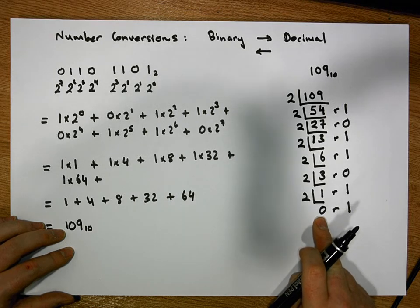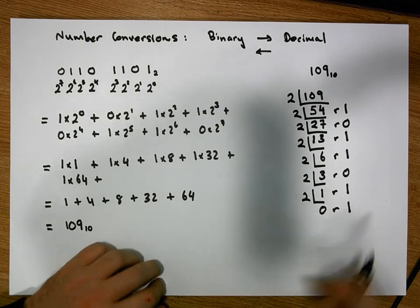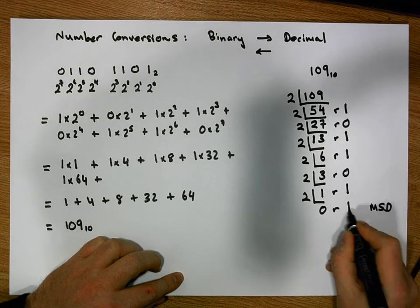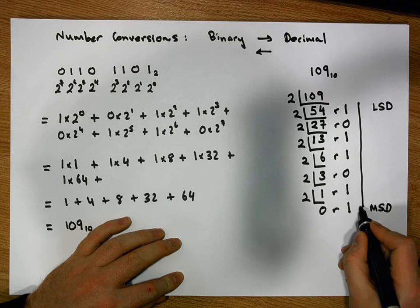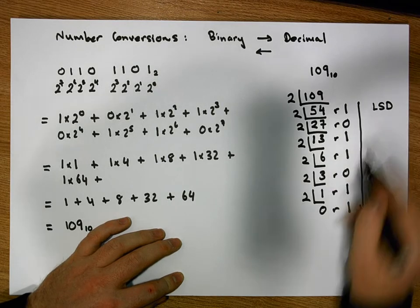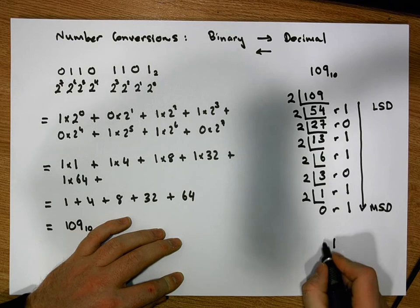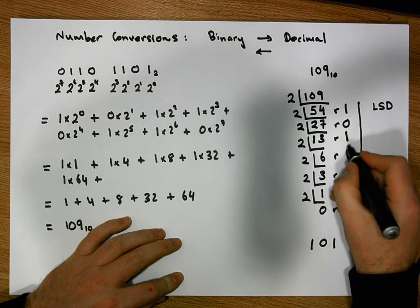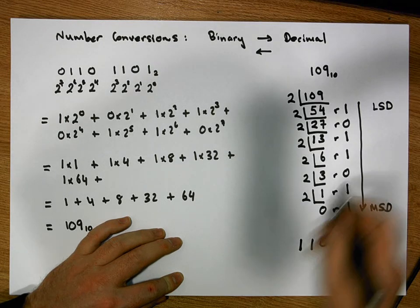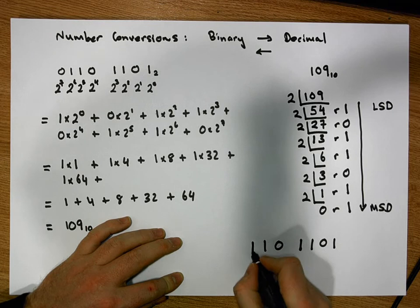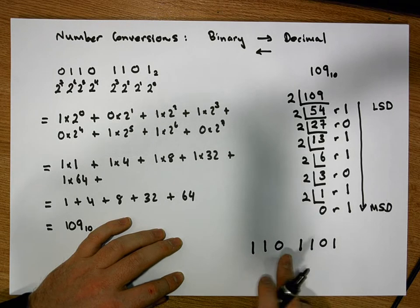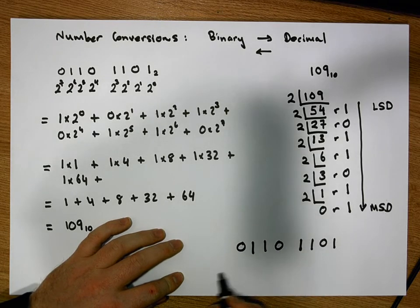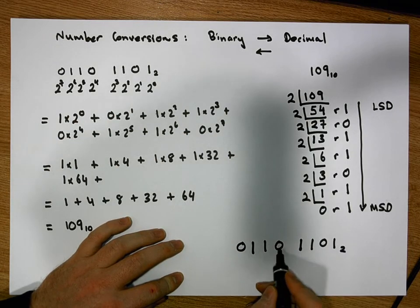We stop when the number will not divide any further. Our new binary number has the most significant digit at the top and the least significant digit at the bottom. Reading the remainders from bottom to top, in groups of four: the least significant digits are 1, 0, 1, 1, then 0, 1, 1. We represent this as an 8-bit number.